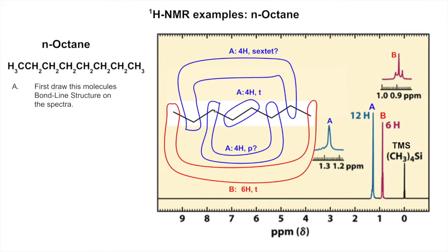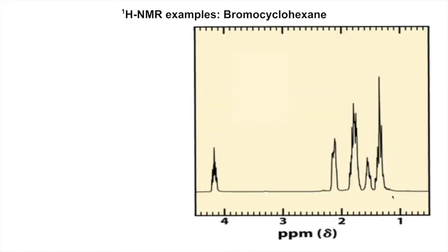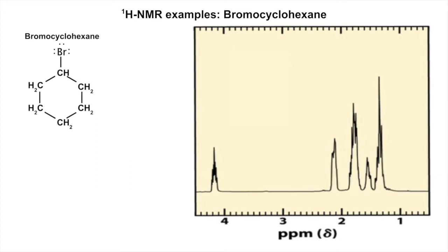As I was saying earlier, these can get so complicated they kind of get easier because we don't even get to see the coupling. So if you just see a clump and then an ugly triplet a little below one ppm, you're like, oh, that's a long linear alkane.